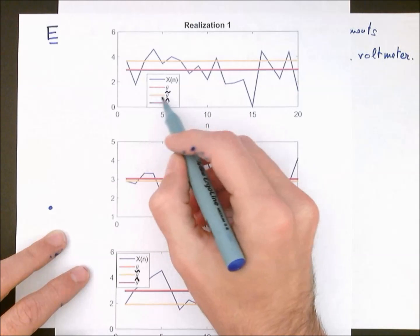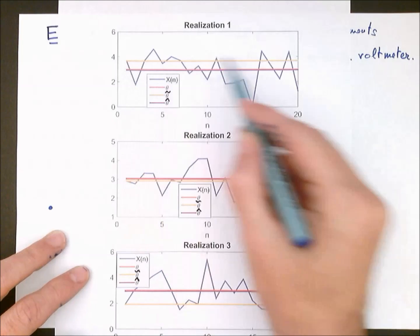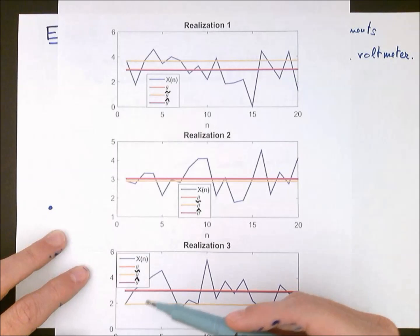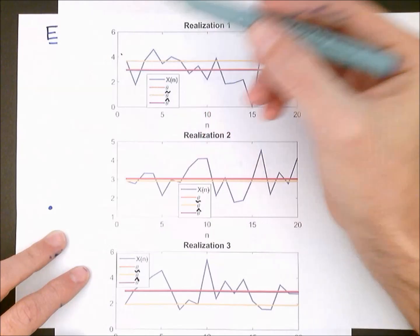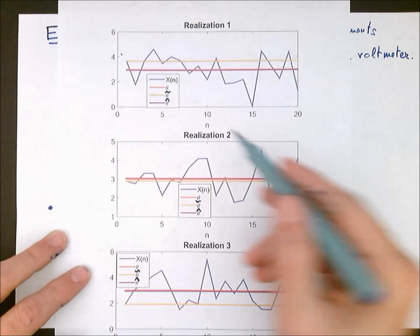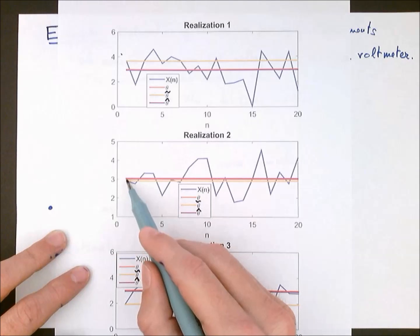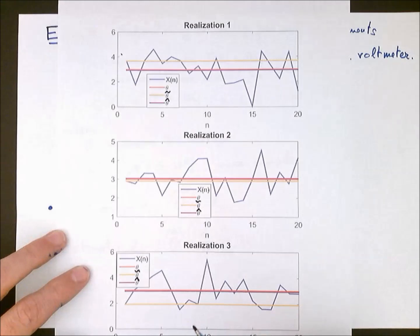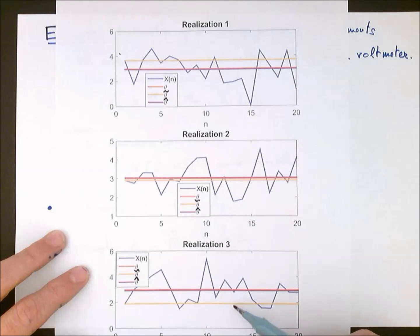Estimator 1 simply picks the first measurement and sets it as its estimate. In some cases, like the first and third realizations, the first measurement is actually relatively far away from the true value — in this case the true value is 3 — and therefore the estimator produces large errors. For the second realization, however, the first measurement has a very small error around the true value of z and therefore provides an accurate estimate. You can also see that for the first realization Estimator 1 is overestimating the true parameter, and for the third realization it is underestimating.